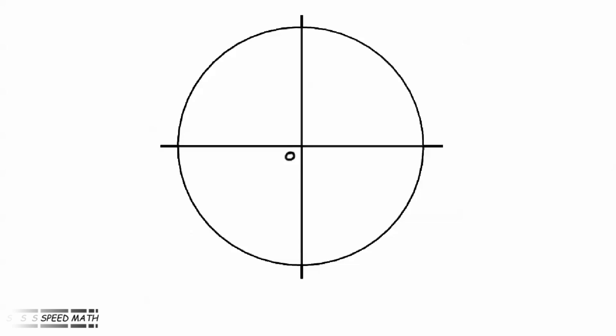To explain this, we start with the origin at the center of a unit circle. The x and y axes pass through the origin to positive and negative values. These axes divide the circle into four quarters or quadrants. The first quadrant is from 0 to 90 degrees, the second is from 90 to 180, the third is from 180 to 270, and the fourth quadrant is from 270 to 360.